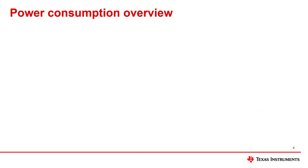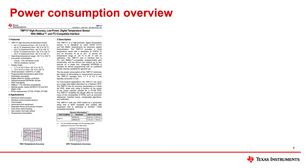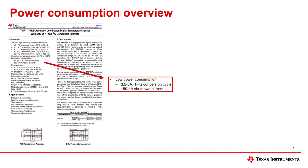Now that we have discussed temperature accuracy, let's look at another important parameter found in temperature sensor data sheets: power consumption. This value will also commonly be found on the first page of a data sheet, and it is important to consider when designing an efficient system. When we look at power consumption for the TMP117 temperature sensor, we see that 3.5 microamps are consumed for a 1 hertz conversion cycle, and 150 nanoamps are consumed in shutdown mode. A 1 hertz conversion cycle means that one temperature measurement is made every second. Let's look further into different power consumption values.